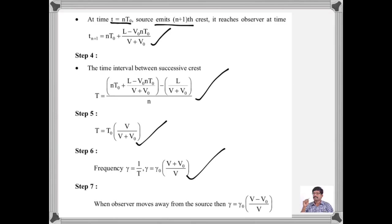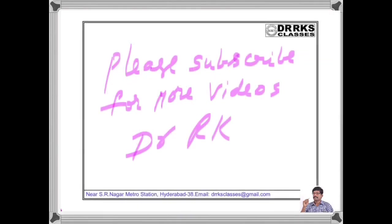Similarly, when the observer is moving away from the source, ν = ν₀ · (V − V₀)/V. So, +V₀ is replaced by −V₀. Please subscribe for more videos. Thank you.